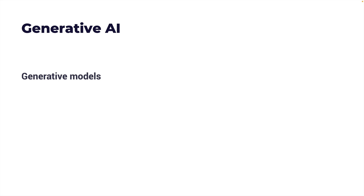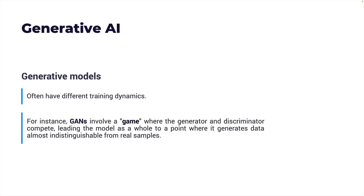Unlike typical neural networks where you adjust weights based on predictions, generative models often have different training dynamics. For instance, GANs involve a game where the generator and discriminator compete, leading the model as a whole to a point where it generates data almost indistinguishable from real samples. That was a quick walkthrough of the various milestones in AI research — traditional or classical machine learning, followed by deep neural networks, and now Generative AI.